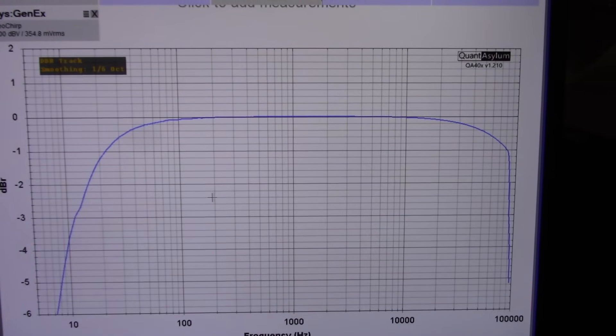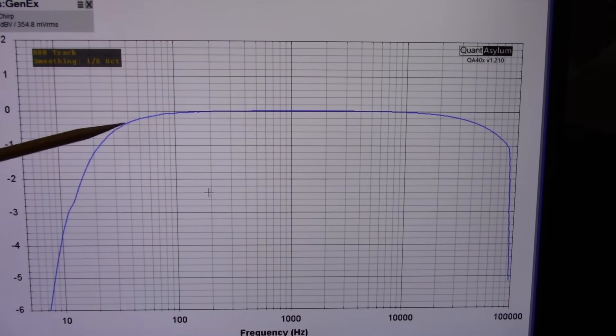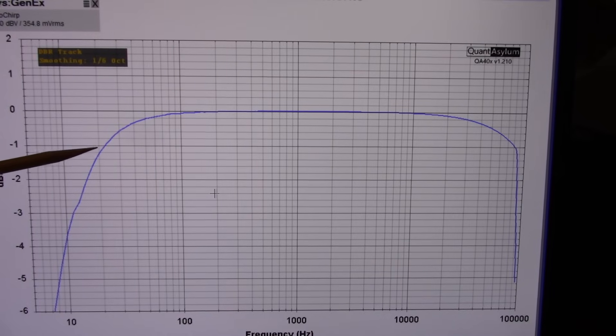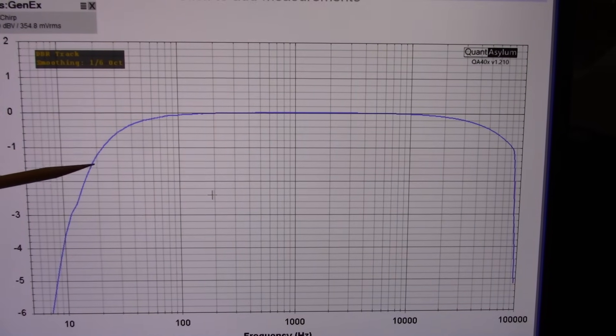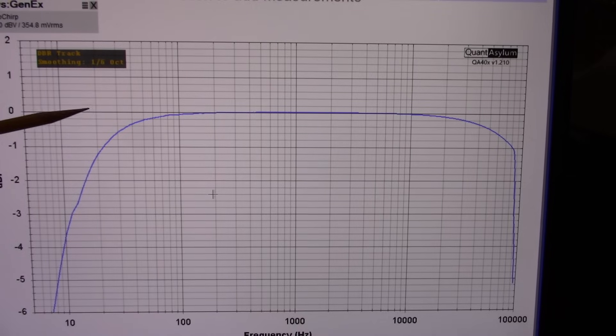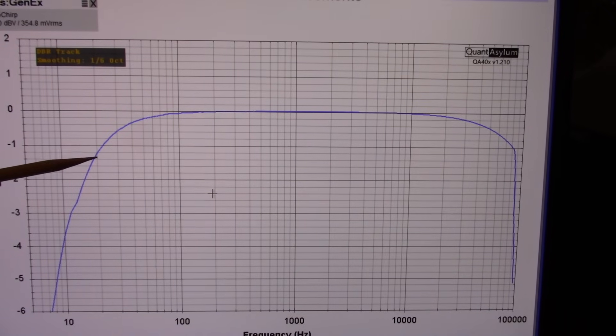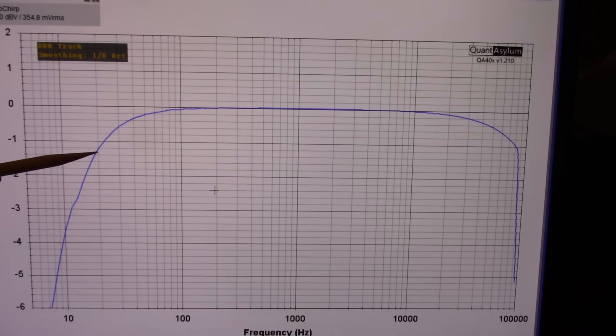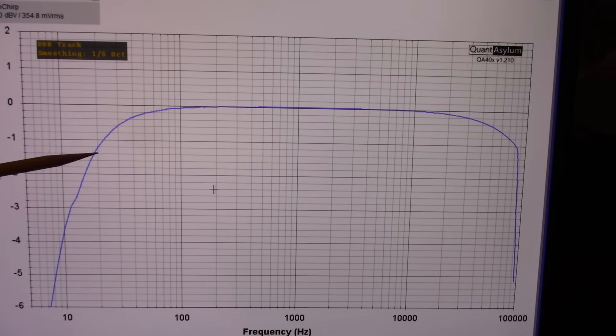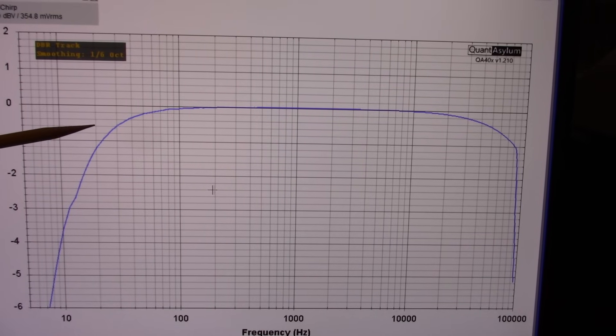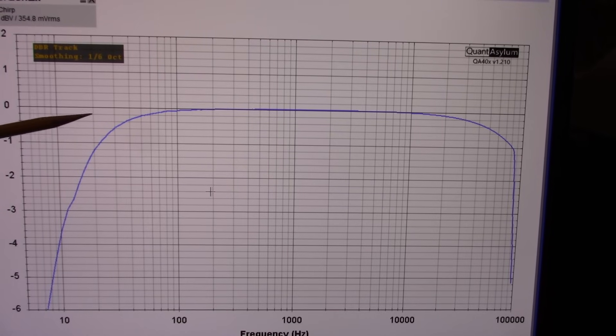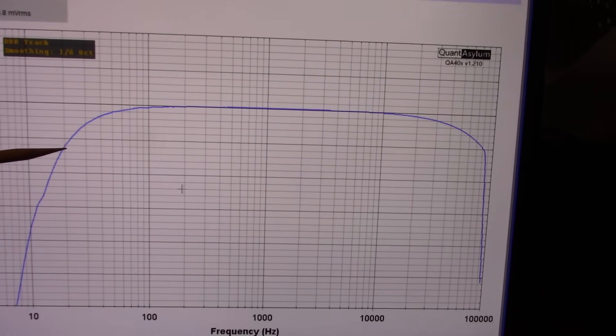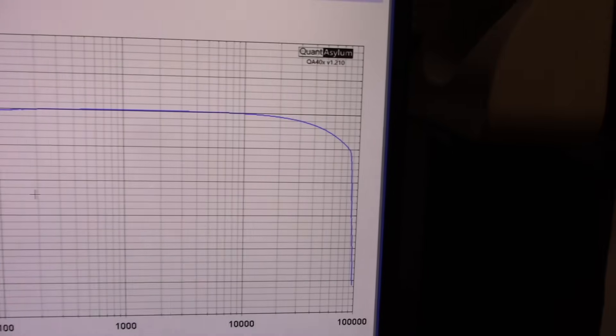Frequency response of this amplifier, well we're down a little more than one dB like 1.2 dB at 20 hertz. You have to remember this is a capacitively coupled output so the value of the capacitor is the main reason for that. You could choose a larger value if you wanted this to roll off less but yeah I don't think it's real serious it's only a little over a dB down at 20 hertz. And at the top end of the scale very good.